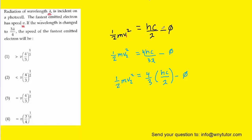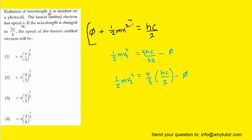Going back to the black equation, we add the work function over to the left-hand side, so that hc over lambda equals the kinetic energy term plus the work function. Since we have hc over lambda in our blue equation, we substitute it with this expression in brackets.